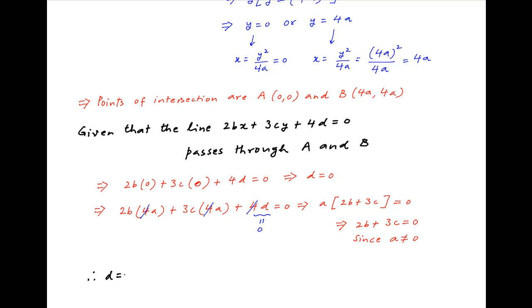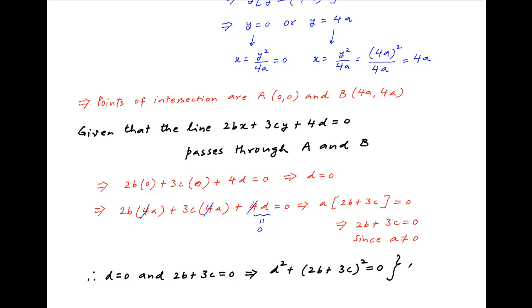Therefore, to summarize: d = 0 and 2b + 3c = 0. Therefore the value of d² + 2b + 3c = 0, which is the required answer.